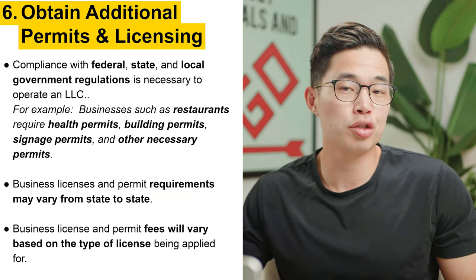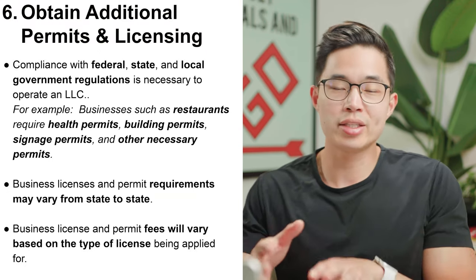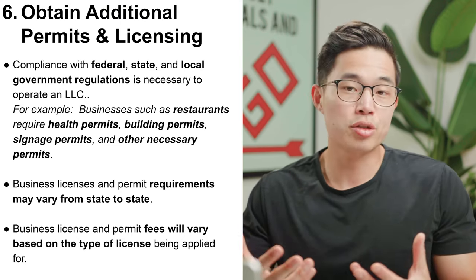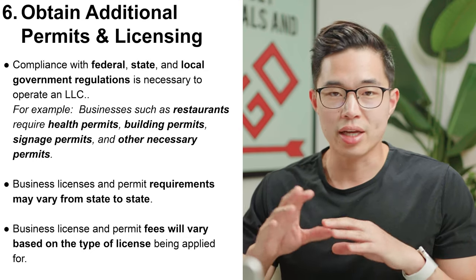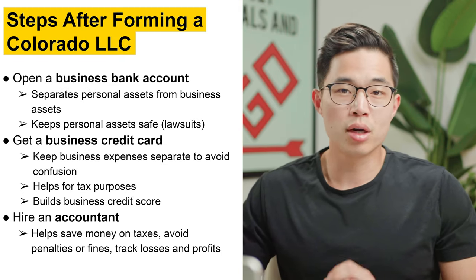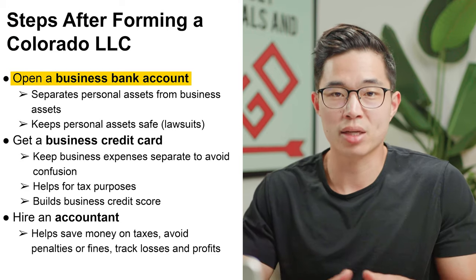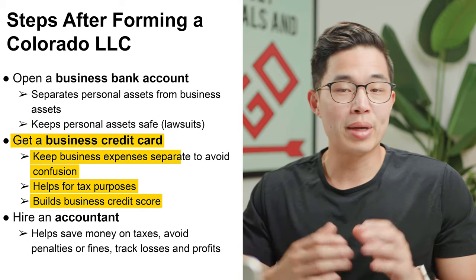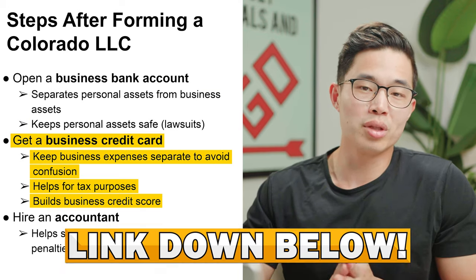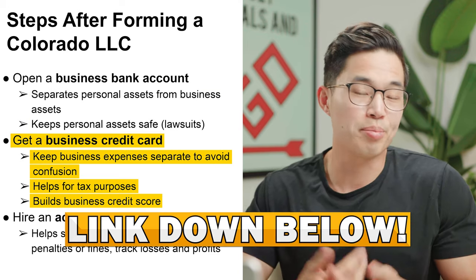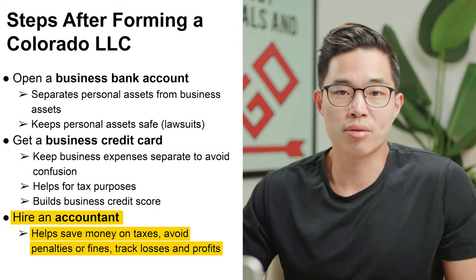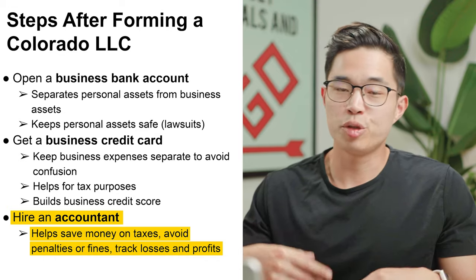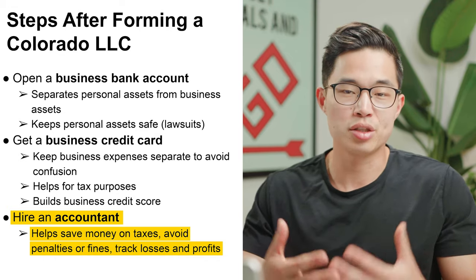Step number six is to obtain any additional permits and licensing. Every business is different, so I recommend looking this up for your specific industry. After forming your Colorado LLC, you'll want to open a business bank account to separate your personal and business assets. You may also want a business credit card — we'll leave links to some favorites below — and you'll definitely want to hire an accountant to help save money on taxes, ensure compliance, and handle payroll and bookkeeping.